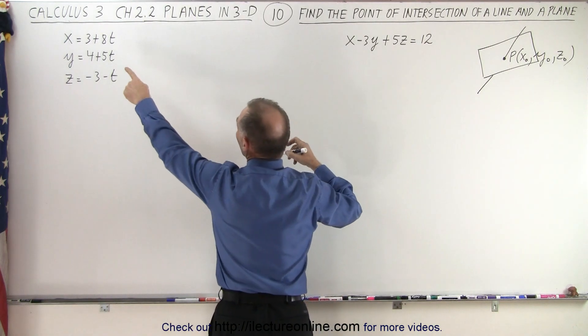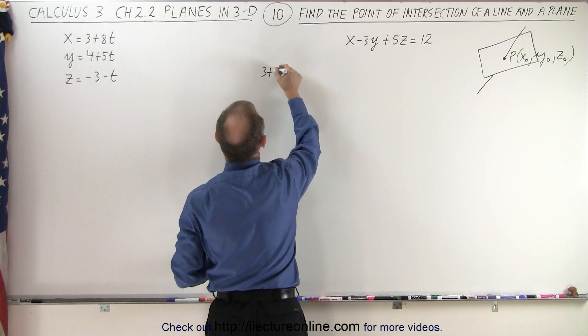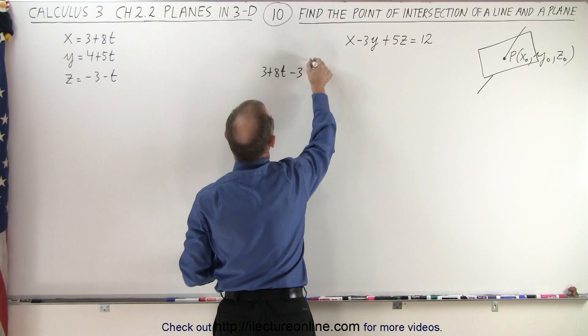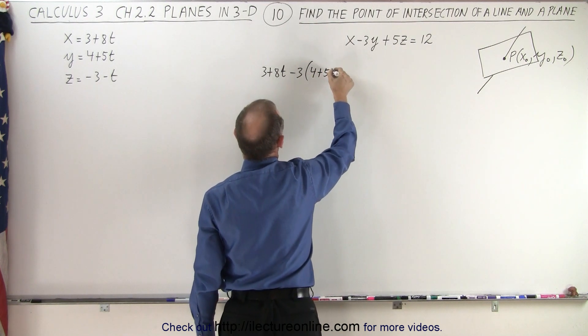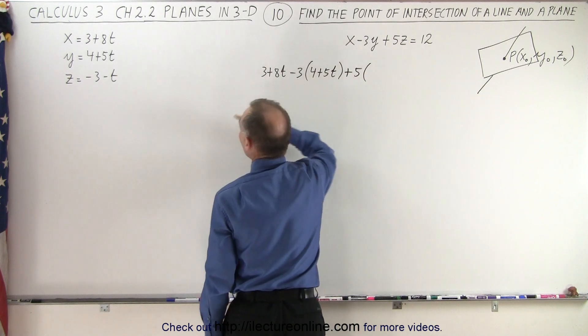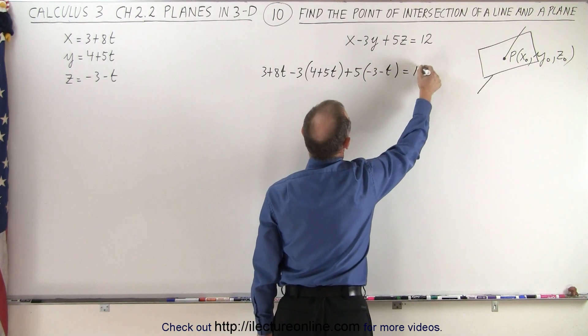So instead of x we're going to plug in 3 plus 8t. So that gives us 3 plus 8t minus 3 times y, which is 4 plus 5t, plus 5 times z, which is minus 3 minus t, and that should equal 12.